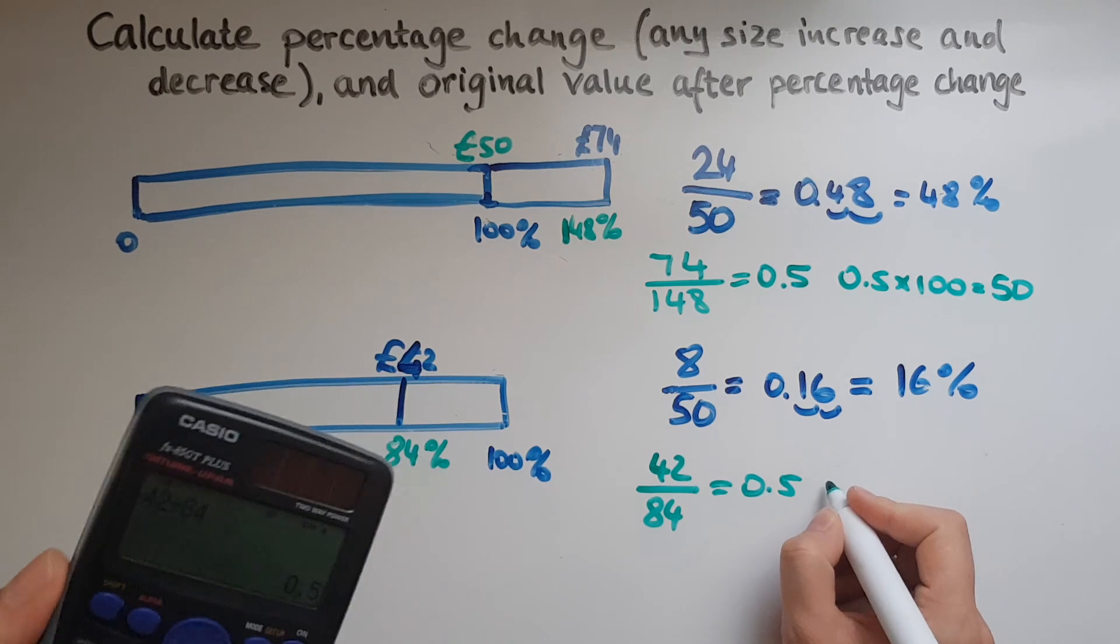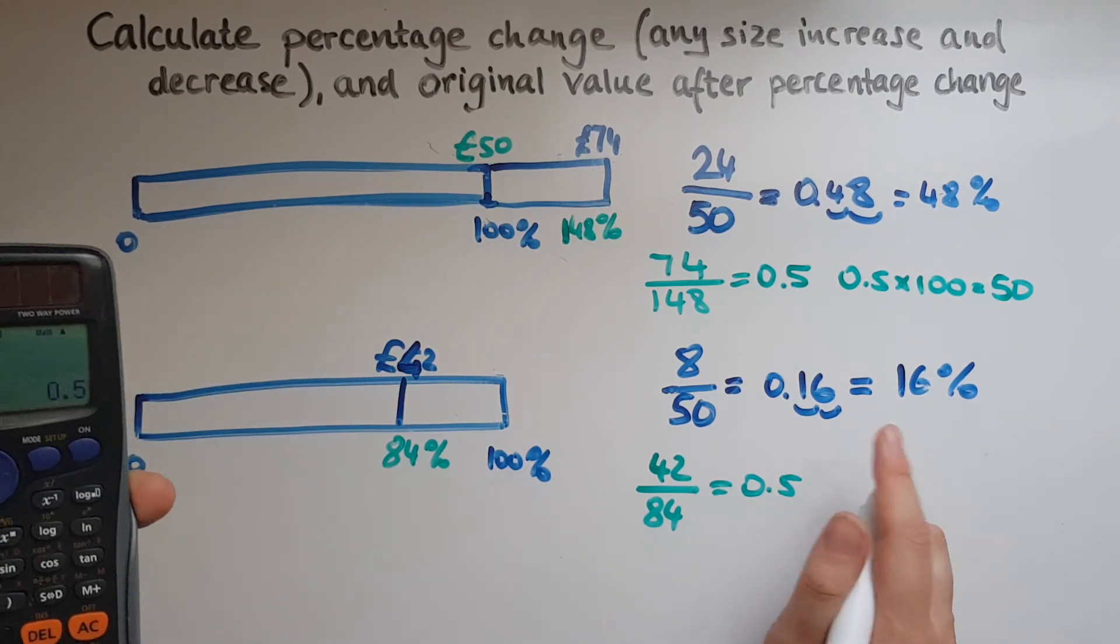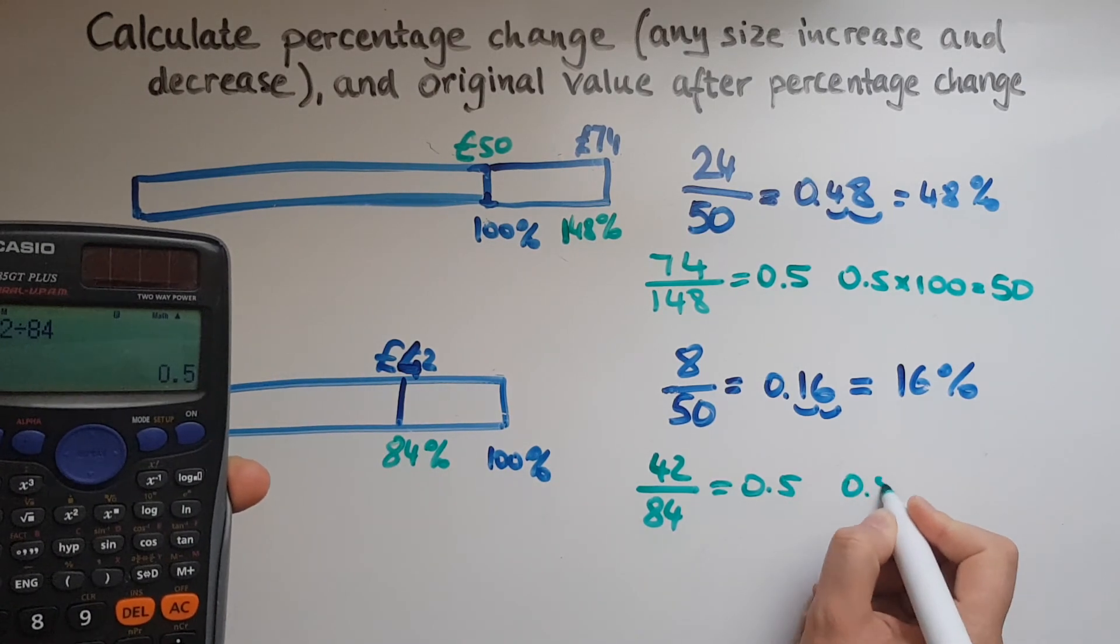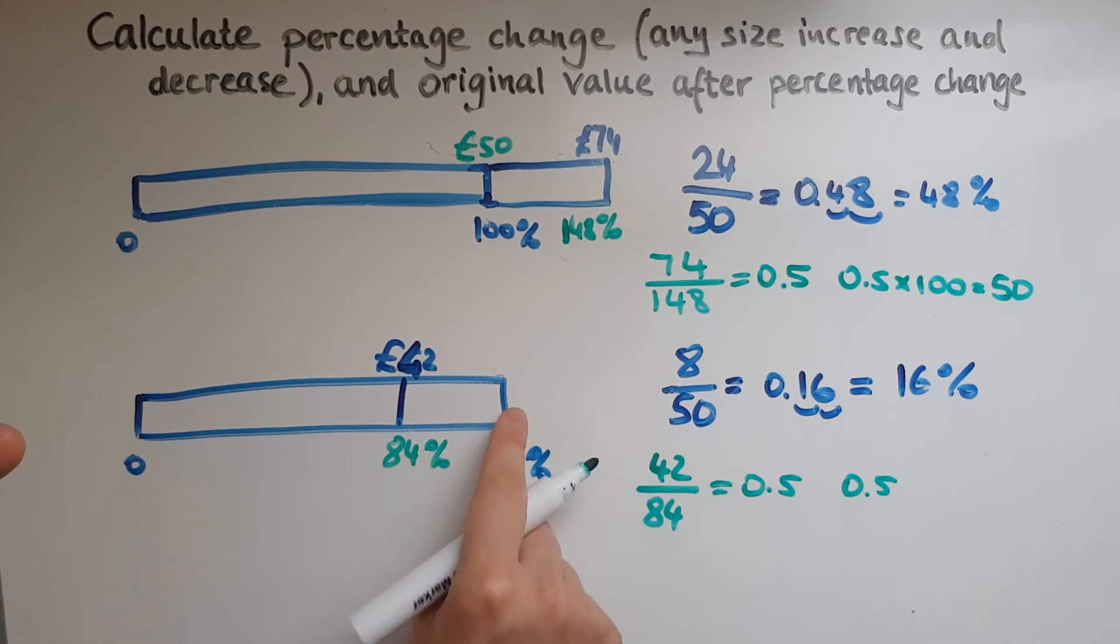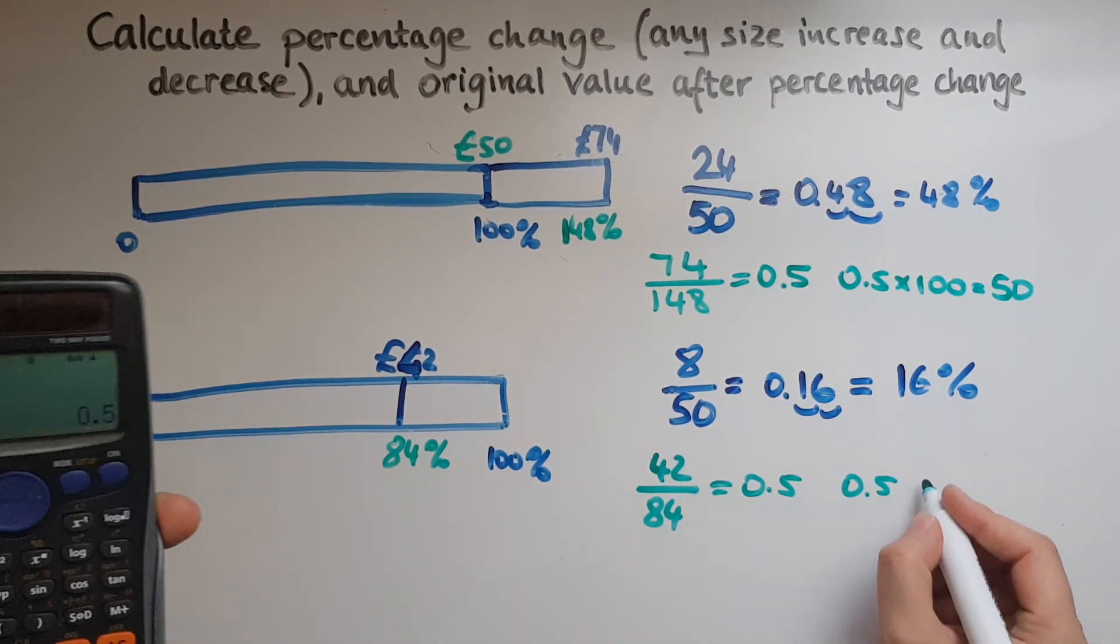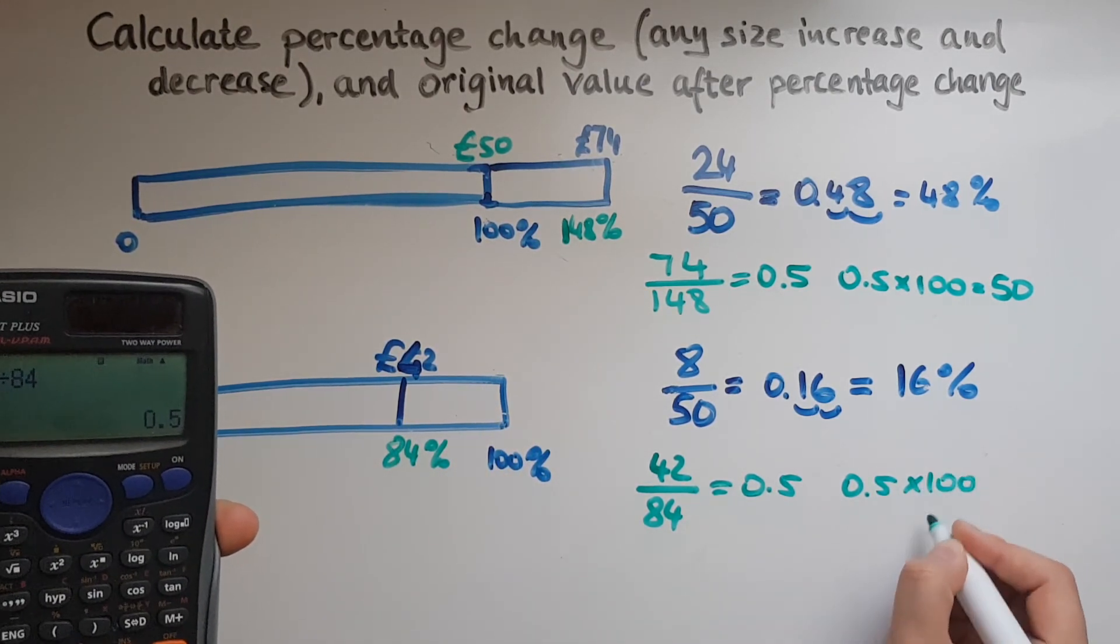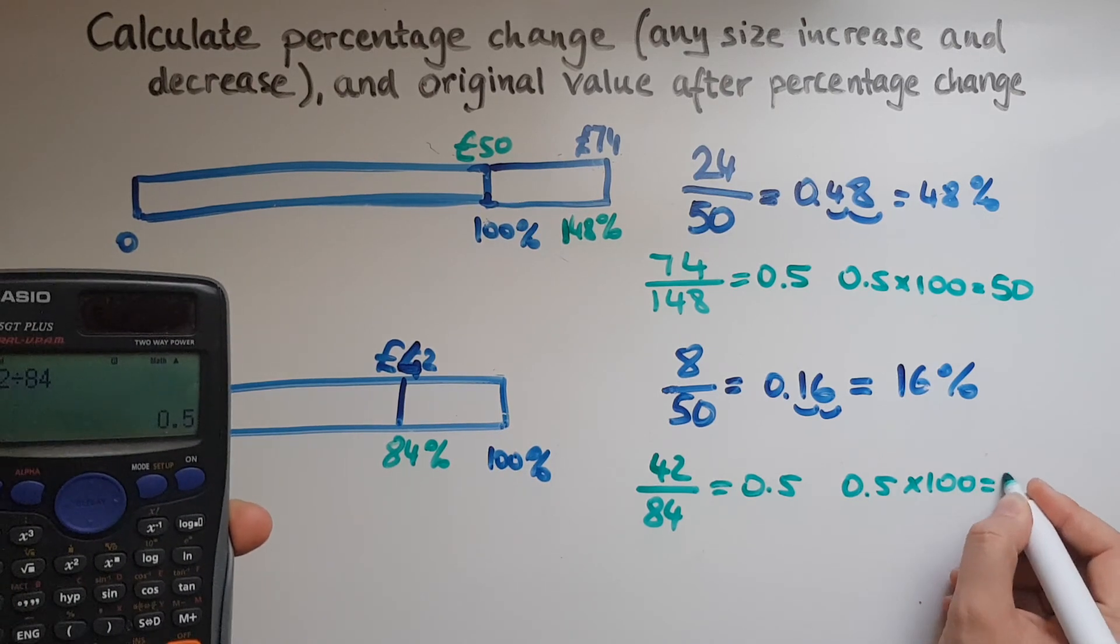So 50 pence is 1%. So 0.5 now, I need to work out 100%. So I'm going to multiply it by 100 to give me 50. So that's giving me 50 pounds for it.